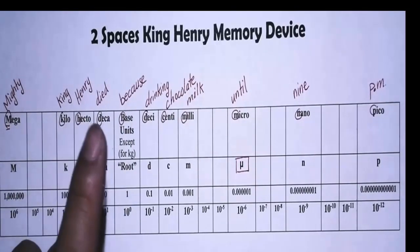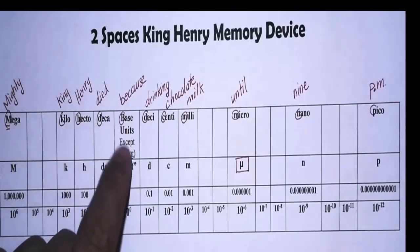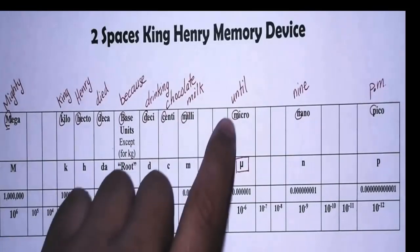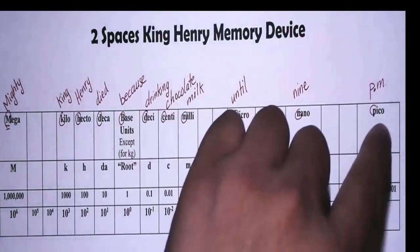The root of kilograms is gram, so they are the root of a scientific word. We have deci, centi, milli, micro, nano, and pico.